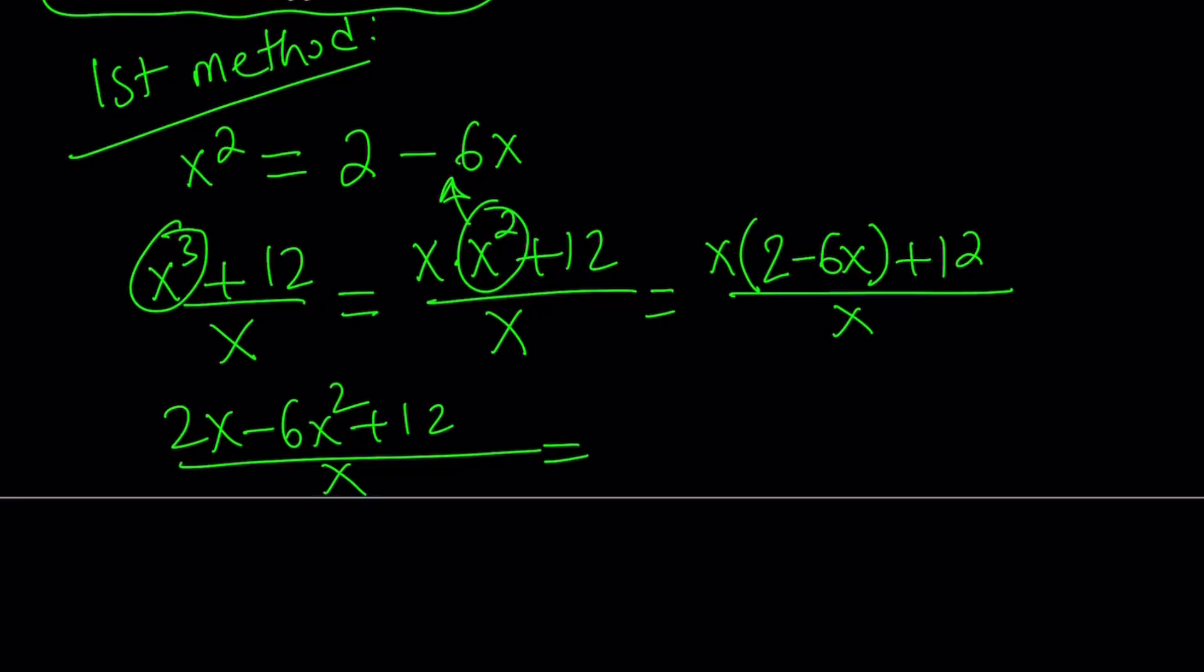And now I'm going to replace x squared with 2 minus 6x again. That's going to give me 2x minus 6 times x squared, which can be written as 2 minus 6x, which replaces x squared plus 12 and then all over x. Now let's use the distributive property here.